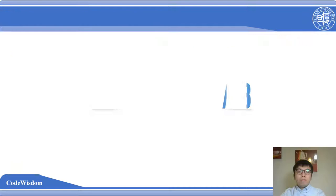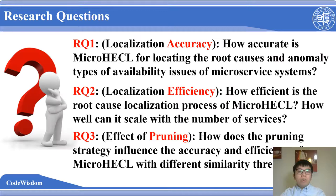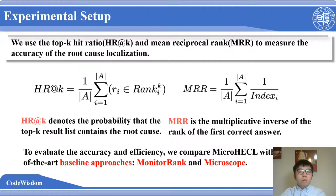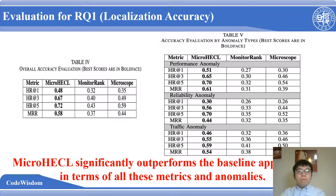In the final part, we give the evaluation results of our approach. We conduct a series of experimental studies to answer the following research questions. Research questions 1 and 2 are the localization accuracy and efficiency of our approach. The third is the effect of the pruning strategy in our approach. We use the top K ratio to measure the accuracy of the root cause localization method. We also compare it with two baseline approaches, one is MonitorRank and MicroScope. As shown in the table, this is the result of the localization accuracy of MicroHackle and the baseline approaches. We can see that the hit rates of MicroHackle are higher than other approaches. So MicroHackle can significantly outperform the baseline approaches in terms of all these metrics and anomalies.